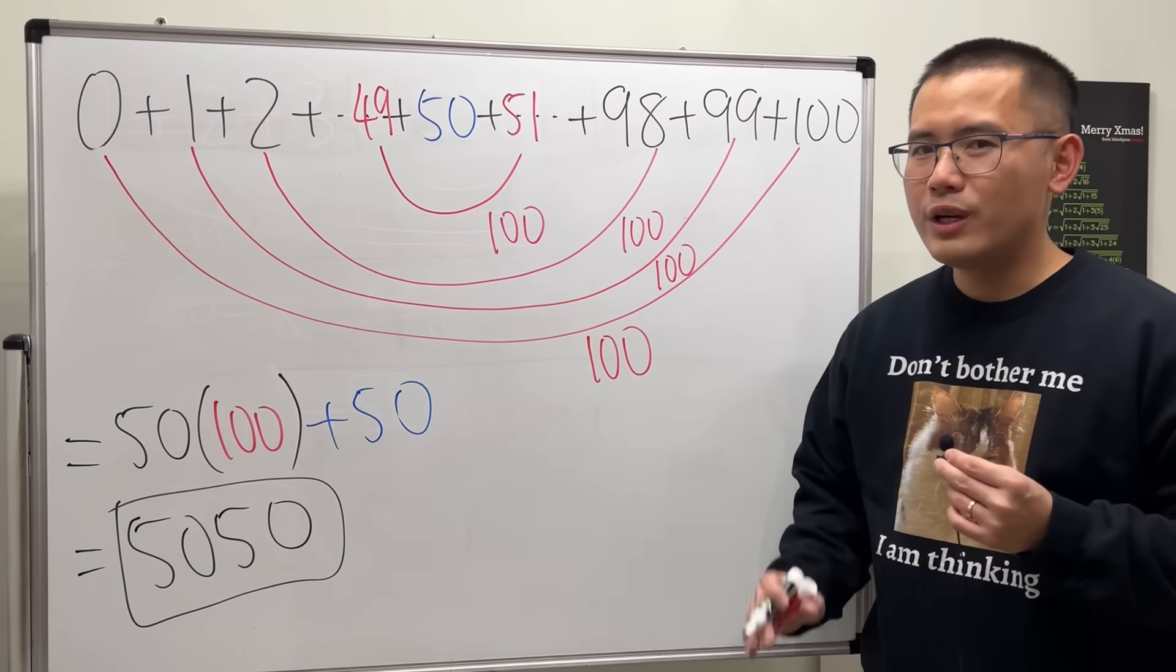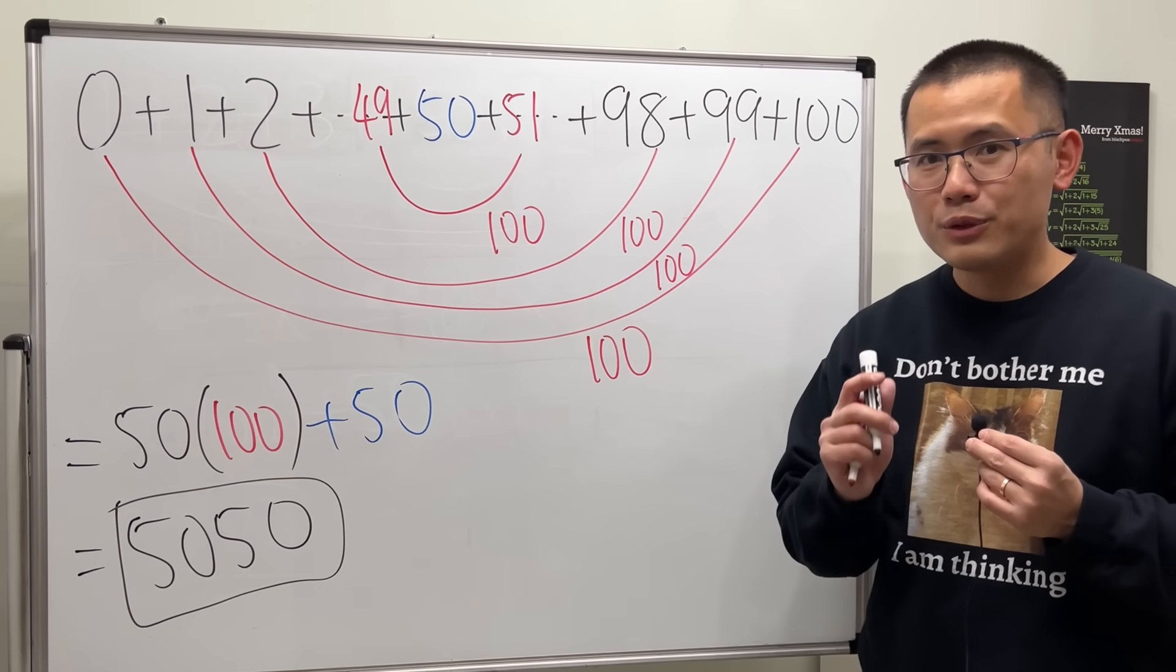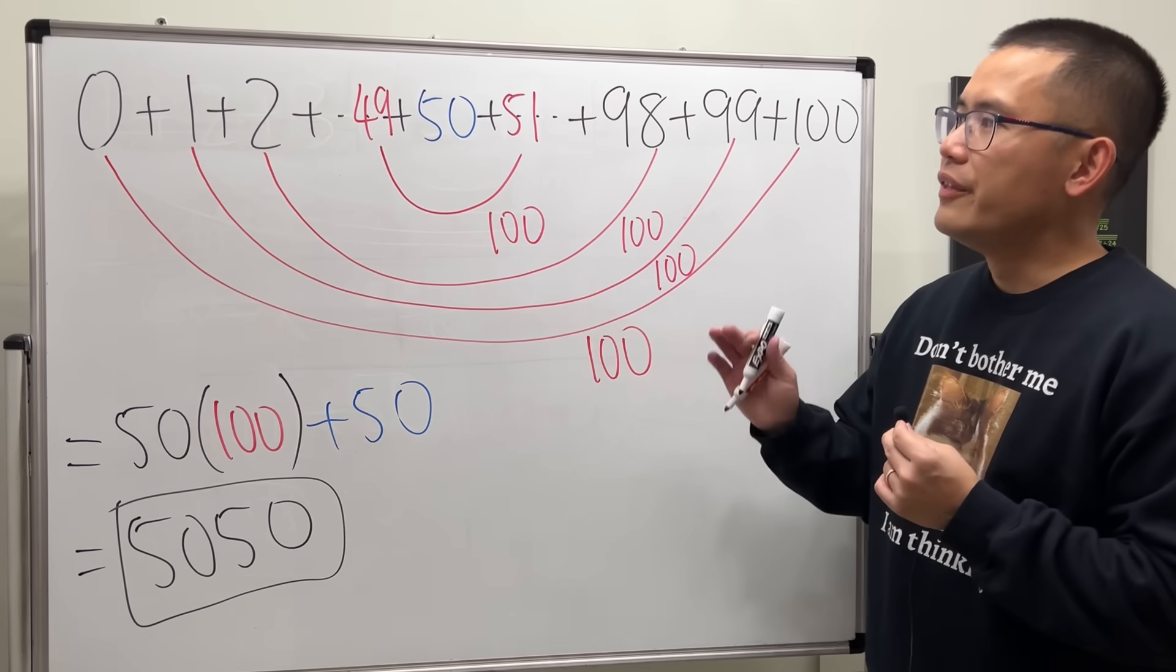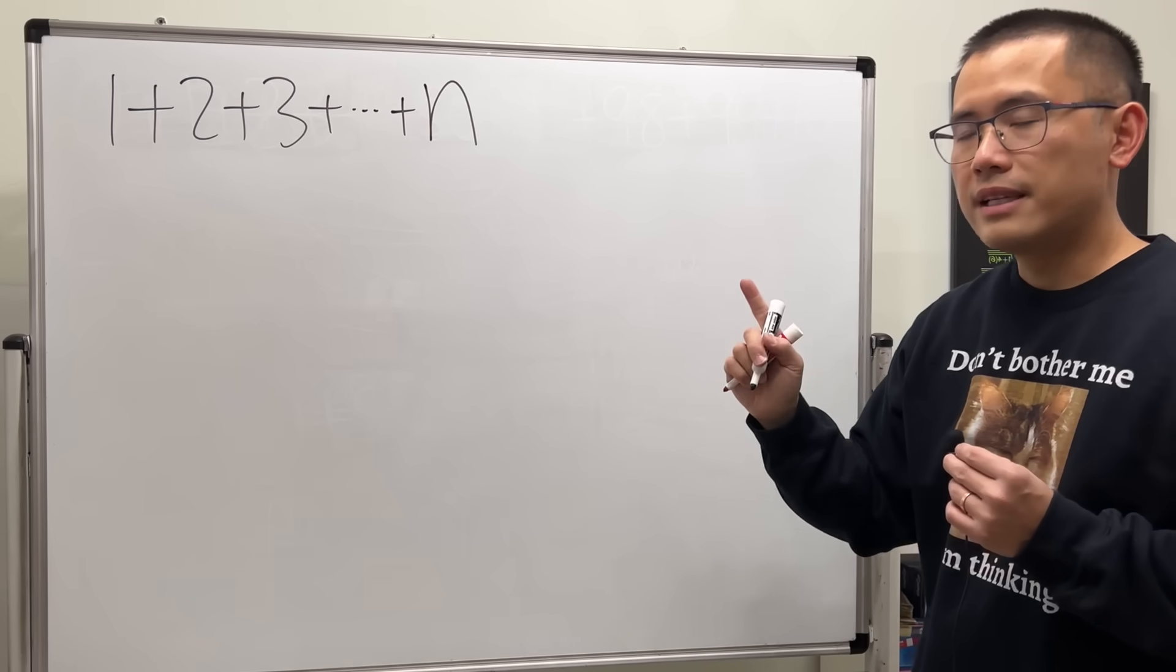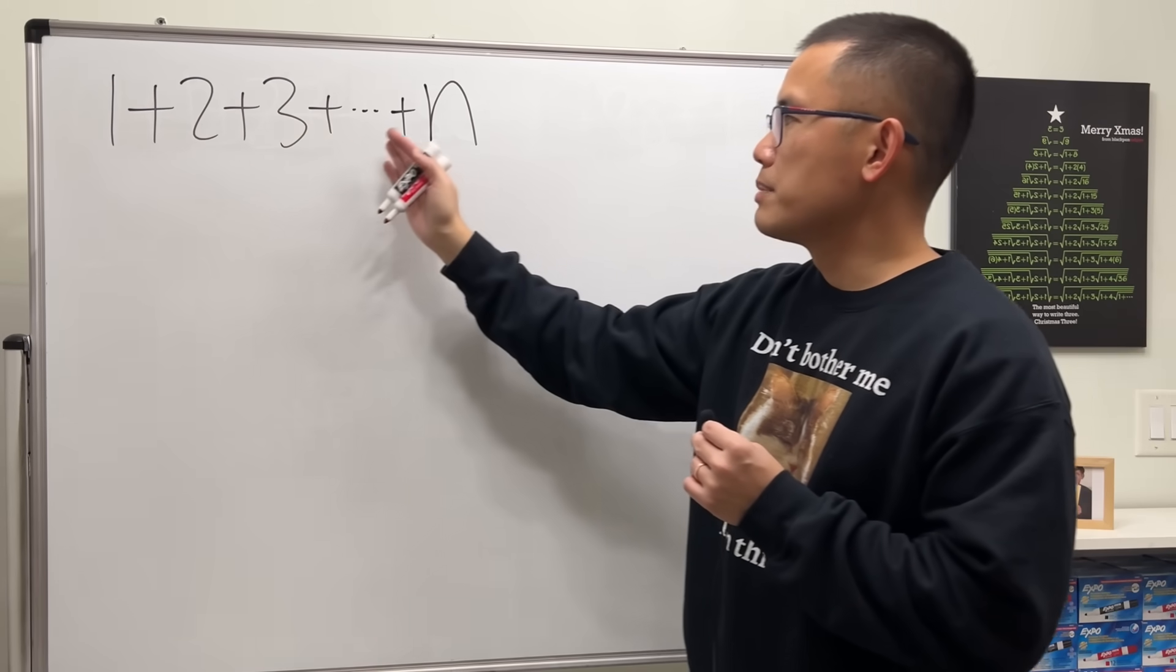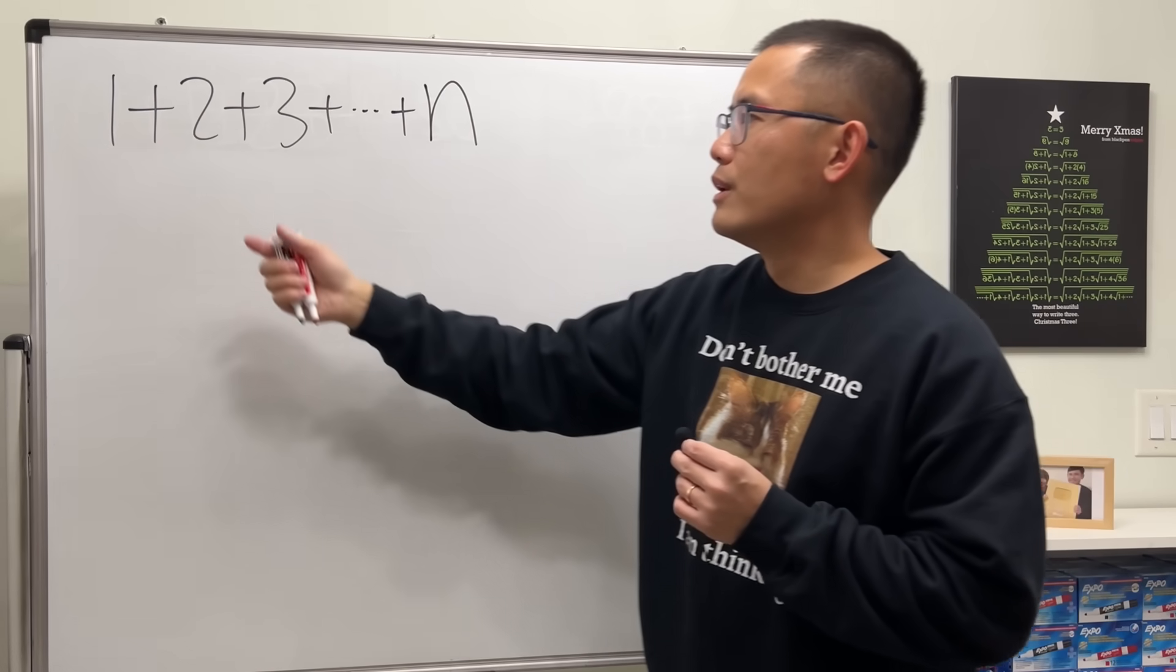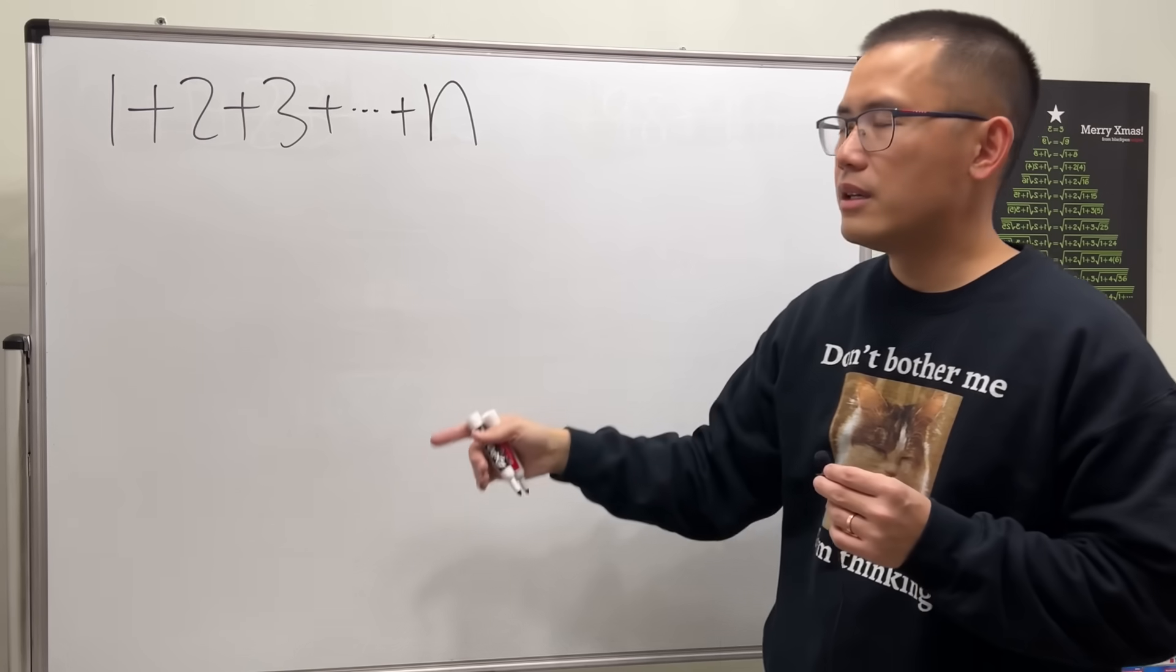And this is a very classic question. In fact, I wanted to take this opportunity to show you the general formula: the sum of the first n natural numbers. Now let's take a look: 1 + 2 + 3 + ... up to n.